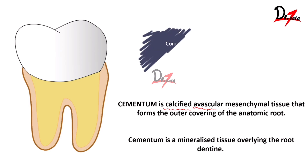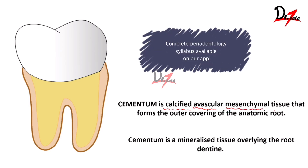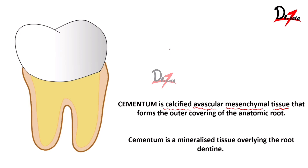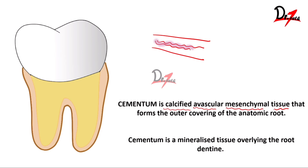The third aspect is that cementum is a mesenchymal tissue. During the process of development we have three germ layers: the ectoderm, the endoderm, and between them the mesoderm. Tissues originating from this mesoderm are the mesenchymal tissues.